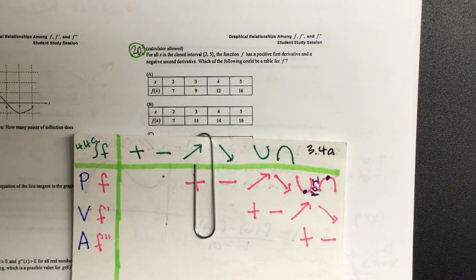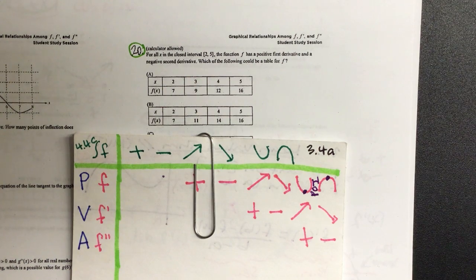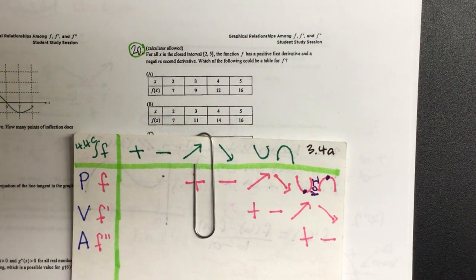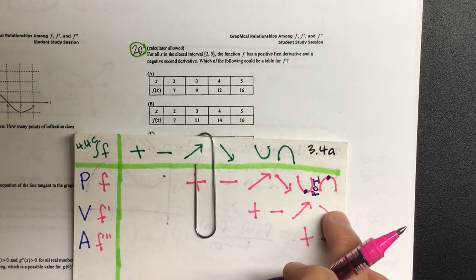For all x in the closed interval 2 to 5, the function f has a positive first derivative and a negative second derivative. Which of the following could be a table for f?